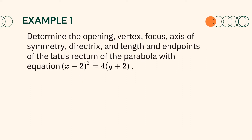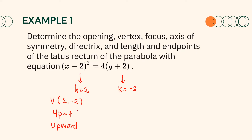Since we have this equation, it follows that h is equal to 2 and k is equal to negative 2. Therefore, our vertex is at point (2, negative 2). Since the squared term is x and 4p is positive with value equal to 4, then our parabola opens upward. Since 4p is 4, the length of the latus rectum is equal to 4 units, which implies that p is equal to 1. Therefore, the focus and the directrix are 1 unit away from the vertex. With vertex, opening, and p determined, we can easily graph and find the other elements.